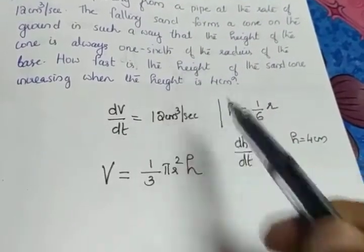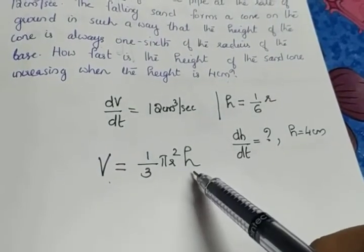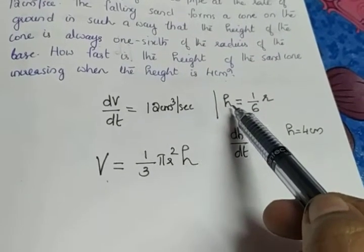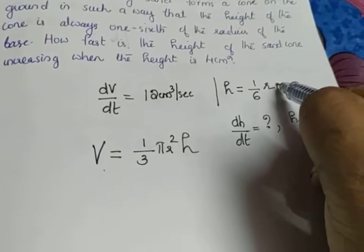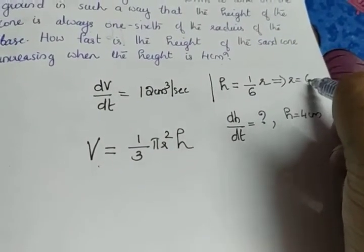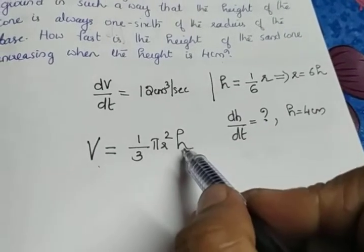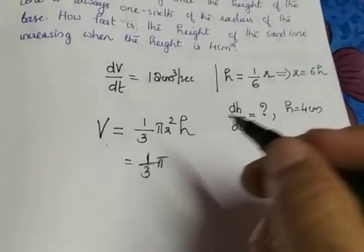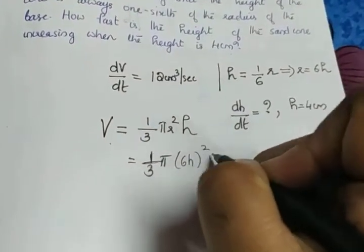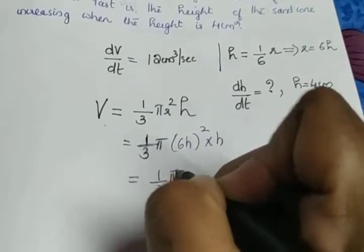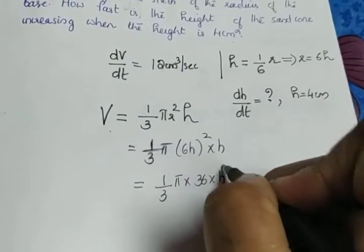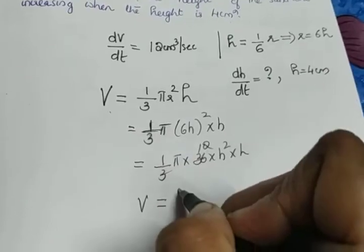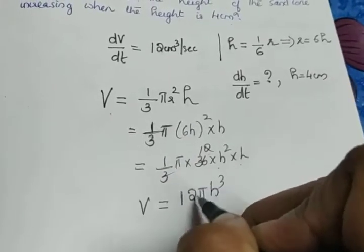We require the rate of change of height, dh/dt. So we substitute for r: if h = (1/6)r, then r = 6h. Substituting into the volume formula: V = (1/3)π(6h)²h = (1/3)π · 36 · h² · h. The 1/3 and 36 simplify to give 12, so V = 12πh³.